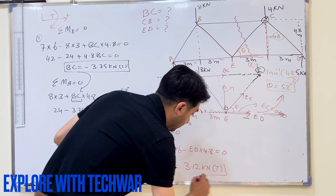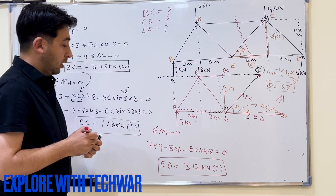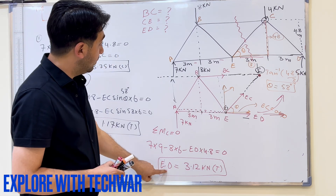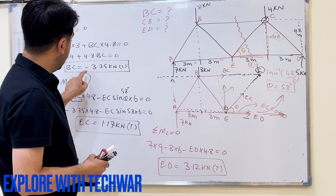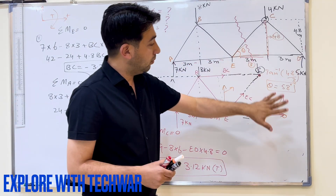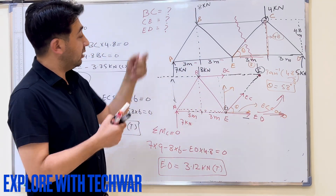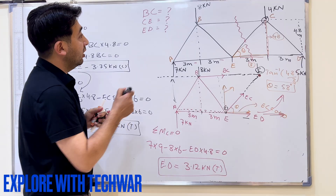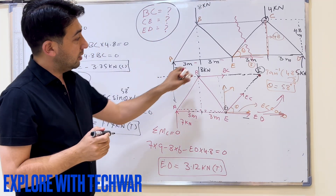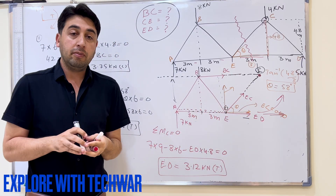So we found all three members: ED, EC, and BC. We don't have to find any other member because the question was to find internal forces in these three members only. Using the method of section, we found those three members only.